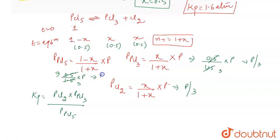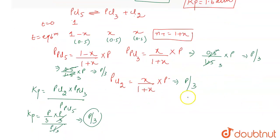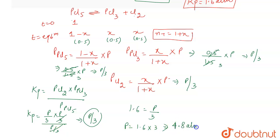Writing the KP expression: KP = (P/3 × P/3) / (P/3). The P/3 terms cancel, giving KP = P/3. Since KP = 1.6 atm, we get 1.6 = P/3, so P = 1.6 × 3 = 4.8 atm. The pressure at which PCl5 is 50 percent dissociated is 4.8 atm.